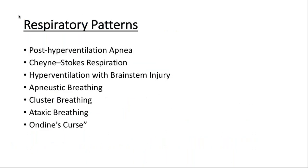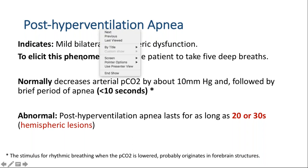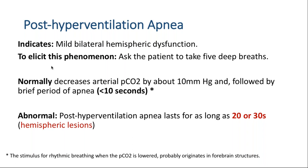Post-hyperventilation apnea, as the name implies, is the apnea occurring after hyperventilation. It indicates bilateral hemispheric dysfunction. To elicit it, we ask the patient to take five deep breaths, washing out carbon dioxide — the PCO2 drops by at least 10 mmHg — followed by an apneic episode usually less than 10 seconds. In a patient with damaged core brain structures, the threshold for detecting PCO2 becomes higher, resulting in an apneic pause of 20 to 30 seconds.